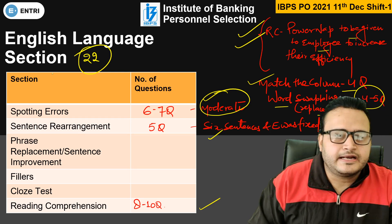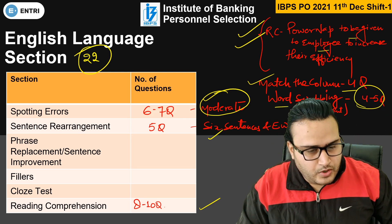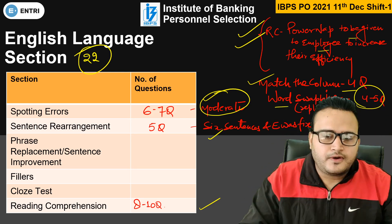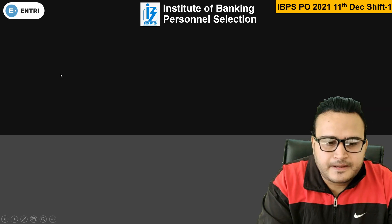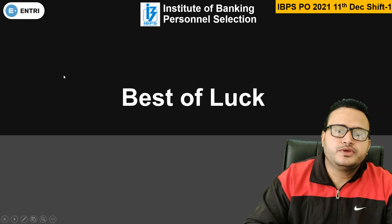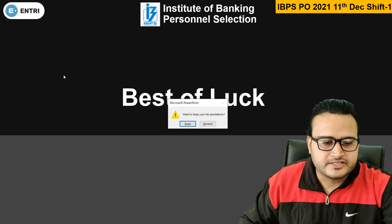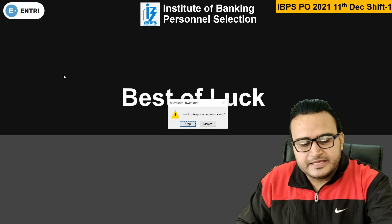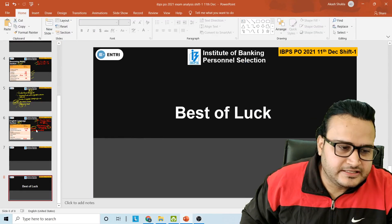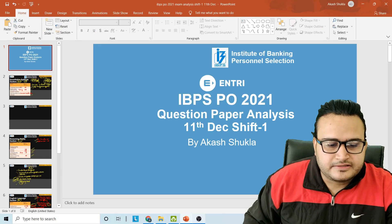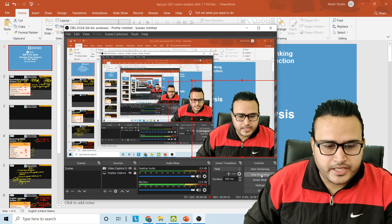The excellent attempt in the English Language section was 22. So this is what I got from the students. Good luck for the upcoming examination. I will be doing further analysis on this channel also. Please let me know what was your attempt in this shift. Thank you very much. Please like the video, share the video, and subscribe. Thank you.